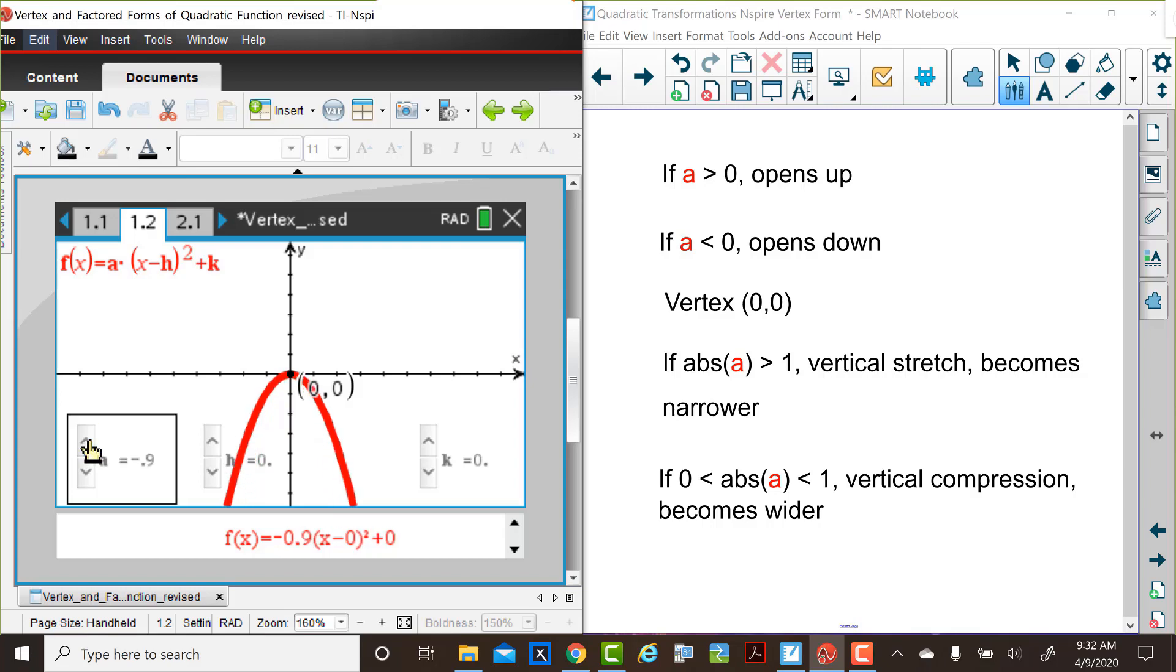The values are, in this case, decreasing more rapidly than the parent function values because of that multiplier. When the absolute value of a is between 0 and 1, we have a vertical compression as function values are increasing less rapidly when compared to the parent function.